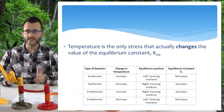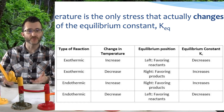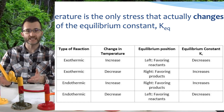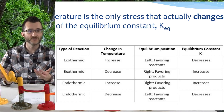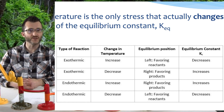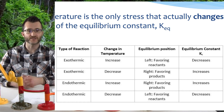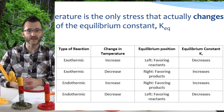Temperature is the only stress that actually changes the value of the equilibrium constant Keq. For an exothermic forward reaction, if you increase the temperature there's a left shift and K decreases; if you decrease the temperature there's a right shift and K increases. For an endothermic forward reaction, if you increase the temperature you shift to the right and K increases; if you decrease the temperature you shift left and K decreases.